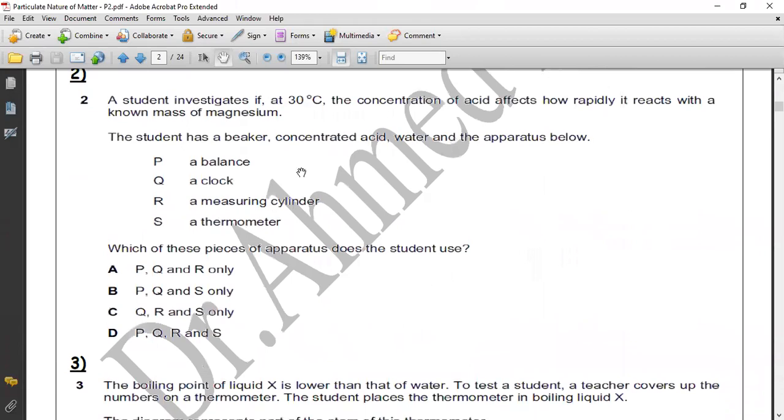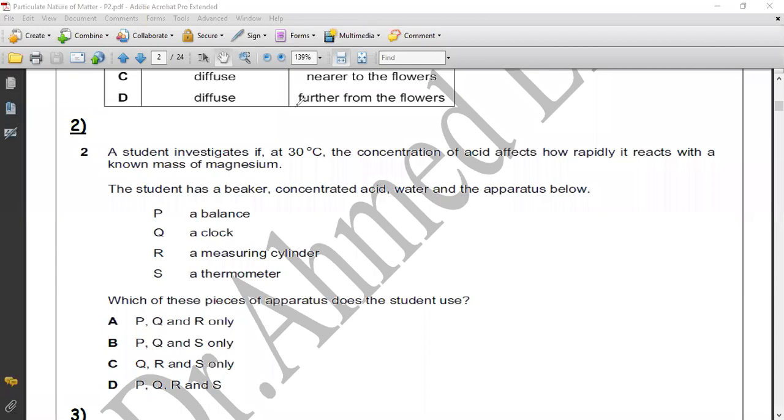Question two. A student investigates at 30 degrees centigrade - temperature requires thermometer to measure. The concentration of acid affects how rapidly - rapidly means time, we measure time with clock. It reacts with known mass of magnesium - mass means we need balance. The student has beaker, concentrated acid, water, and apparatus. Now we need measuring cylinder also because we will repeat the experiment several times with concentrated acid, so we have to measure its volume. The correct answer is we use all of them: G.